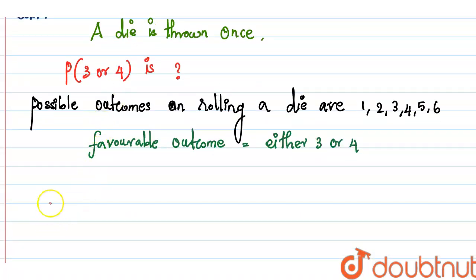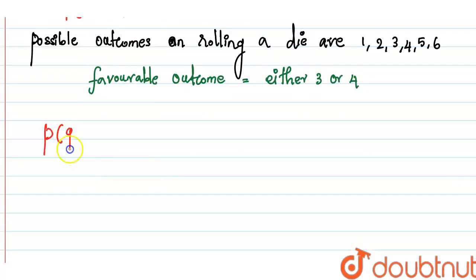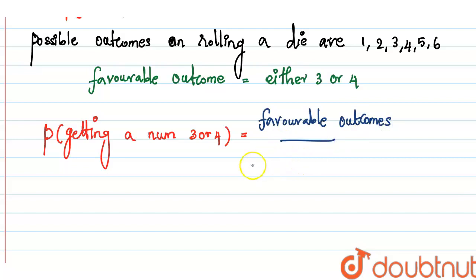We have to find the probability of getting 3 or 4, which is equal to favorable outcomes upon total outcomes. Here the favorable outcome is 2, total outcome is 6.